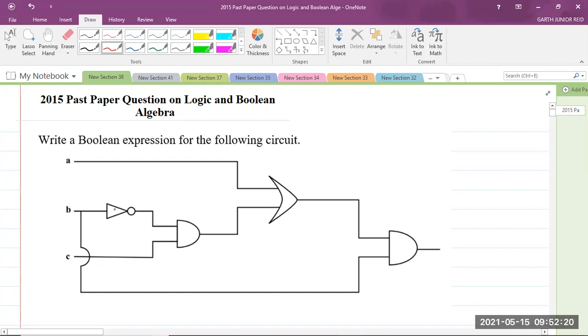B is going through this gate, which is the NOT gate. So when B goes through this gate, the output here is going to be NOT B.